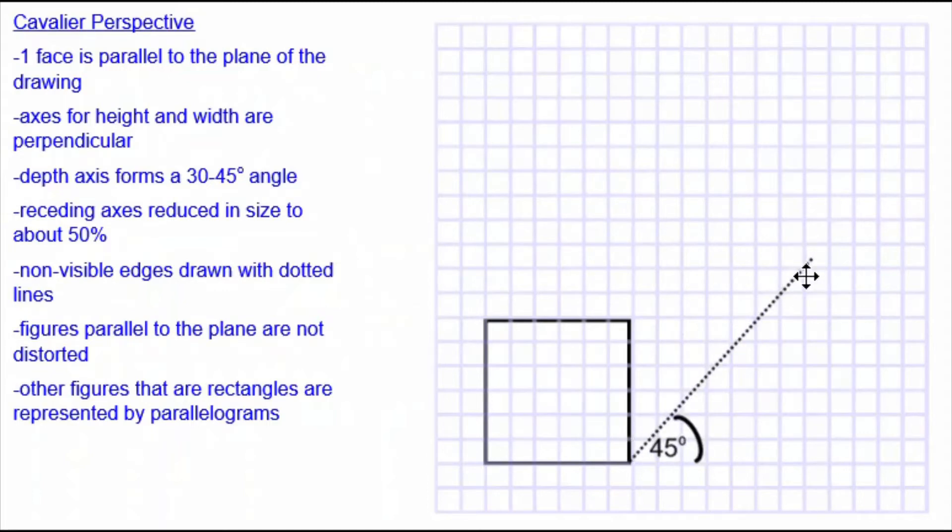That means from each of these three corners I'm going to draw a line at this angle. I'll put all three of those lines on at once. Now I can take away this angle measurement.